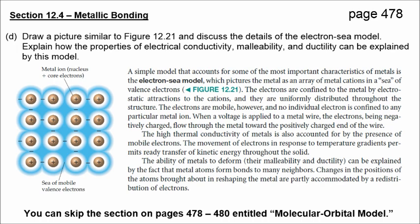We're going to draw a picture similar to figure 12.21 and discuss the details of the electron sea model of metallic bonding. Here is figure 12.21. You can see individual circles with positive charges. That's the metal ion, the nucleus and the core electrons. But all of the valence electrons are loosely held in this sea surrounding each of the metal atoms, the cations. The electrons are confined to the metal by electrostatic attractions to the cations, and they are uniformly distributed throughout the structure. The electrons are mobile. Therefore, it explains why metals are good conductors of electricity, because the electrons can flow throughout. And they're also good conductors of heat. These mobile electrons can move in response to temperature gradients and can permit the transfer of kinetic energy throughout the solid.